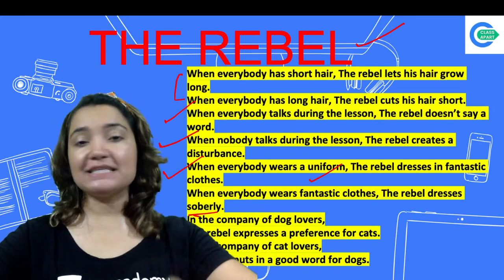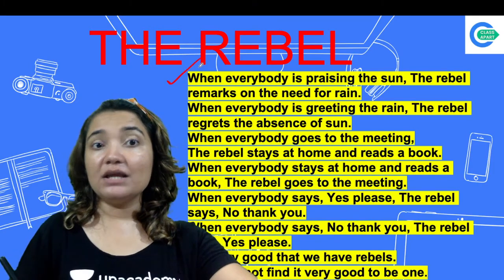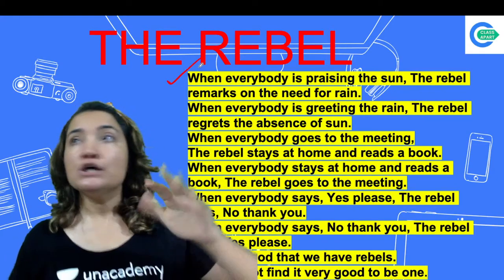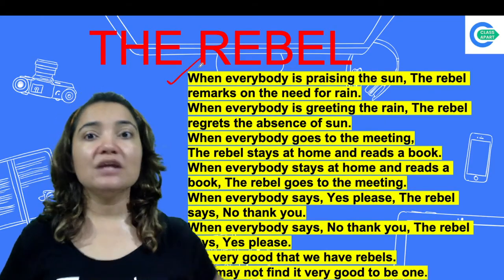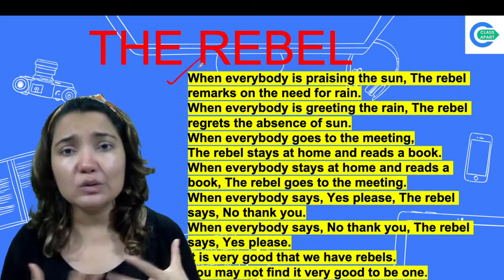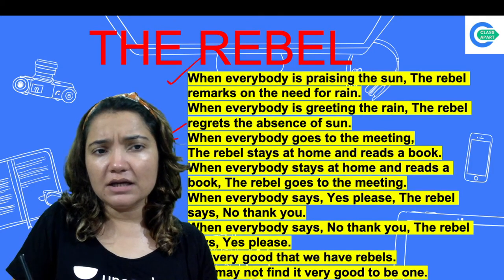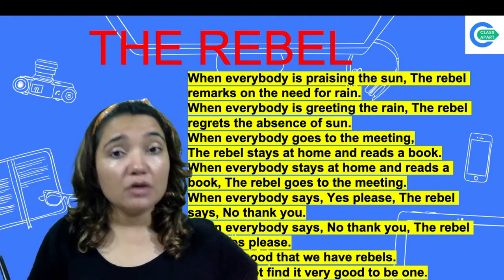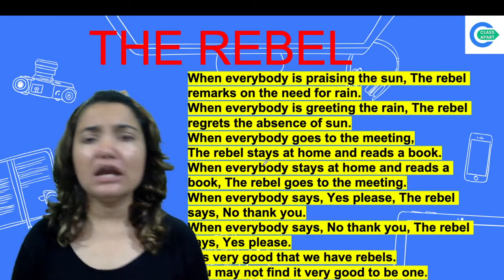'When everybody is praising the sun, the rebel remarks on the need for rain.' Jab har koi sun ki taareef kar raha hota hai — ki aray achha hua dhoop nikal gayi — toh rebel baarish ki zarurat ke baare mein bolta hai. 'And when everybody is greeting the rain, the rebel regrets the absence of sun.' Regret ka matlab hota hai afsos karna. Jab har koi baarish ki umeed kar raha hota hai, toh rebel suraj na hone ka afsos karta hai.